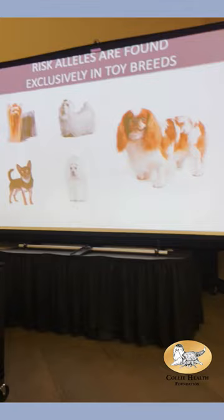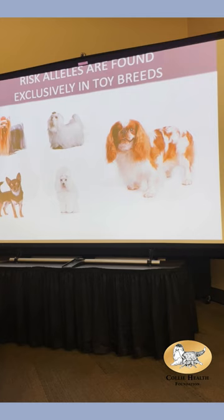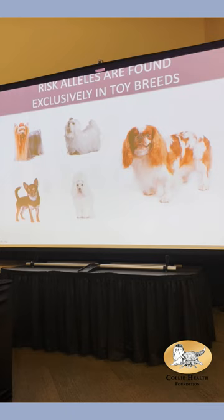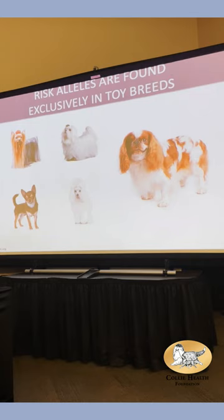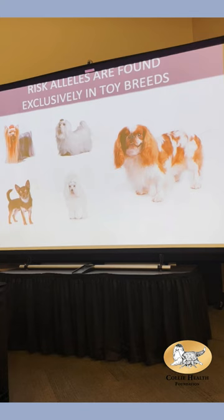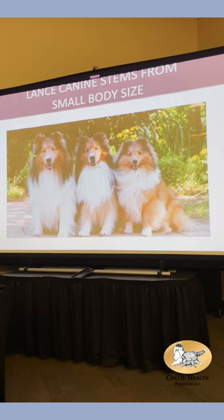In our study, each deleterious allele removes 5 pounds in weight from the dog's average, and each deleterious allele removes 1 inch in height. The interesting thing is: we wanted to select for small Shelties, but we brought in something that's not compatible with what we already have. Toy breeds don't have crooked teeth, but they're already really small.